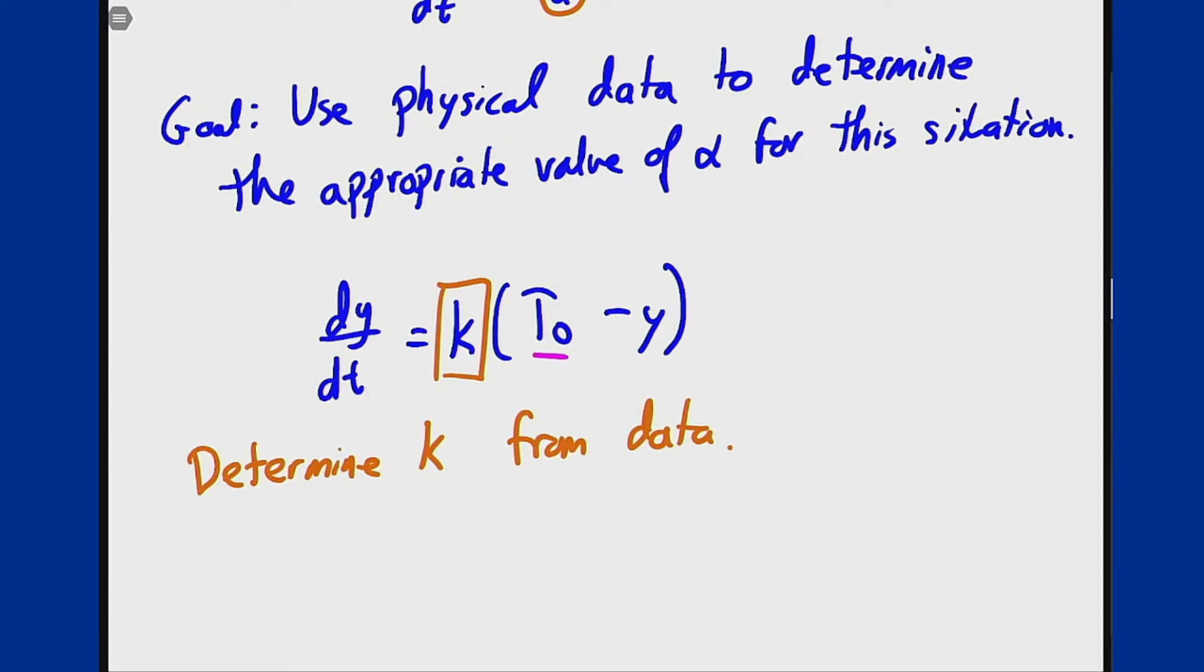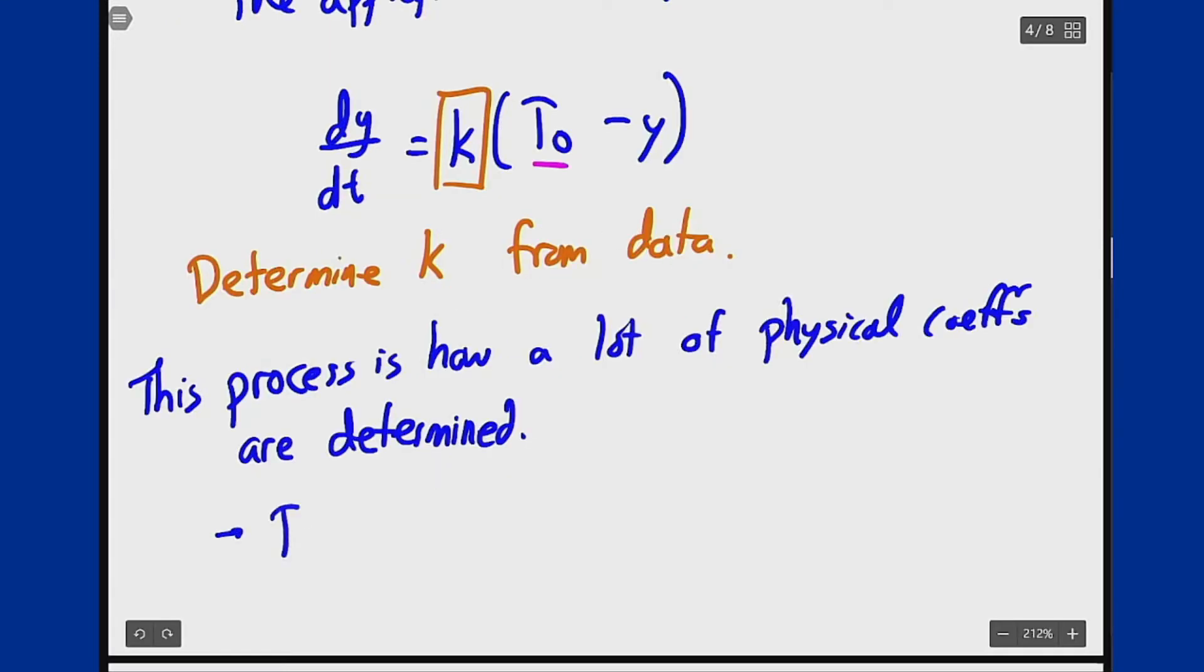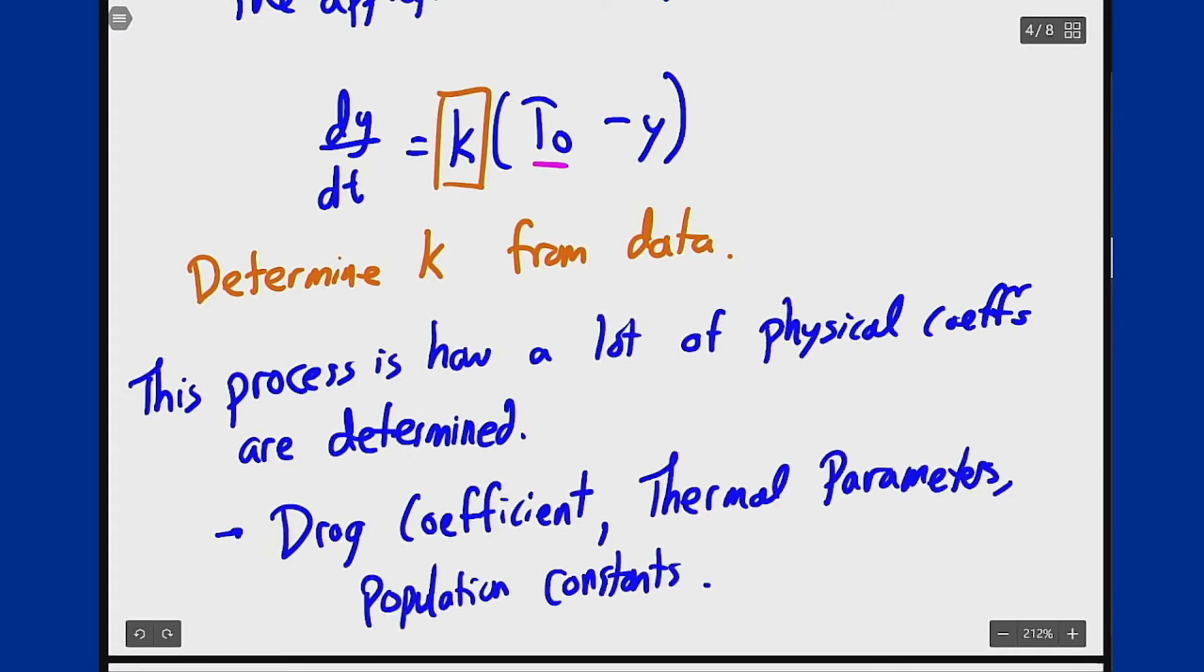It turns out this is how a lot of physical coefficients like this are determined. Things like drag coefficient, heat transfer coefficient, thermal conductivity, population growth constant. A lot of those are just experimentally determined from data and estimated based on a physical situation. Then we can use those coefficients to try to solve more advanced problems using those as our base information that we know. Like drag coefficient, thermal parameters, population constants all really get built from this method.